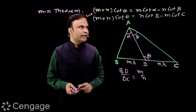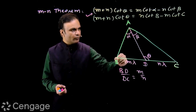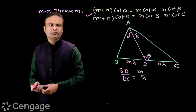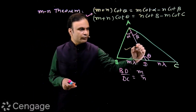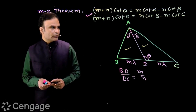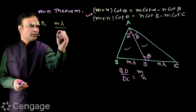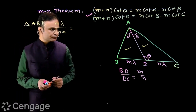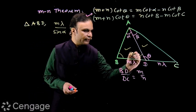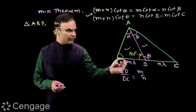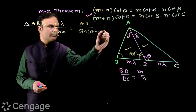The first formula of the MN theorem is: (m + n) cot theta = m cot alpha minus n cot beta. Since side AD is common between triangles ABD and DAC, we use the sine rule for both triangles. In triangle ABD, applying the sine rule: m lambda upon sine alpha equals AD upon sine of theta minus alpha, since the angle at D in triangle ABD is 180 degrees minus theta, making angle B equal to theta minus alpha.